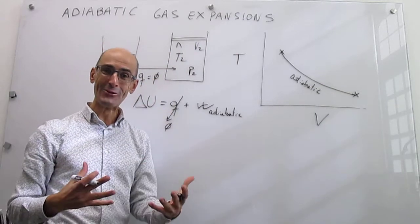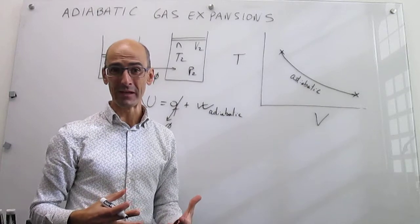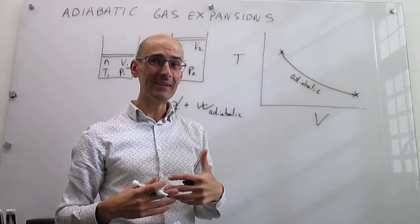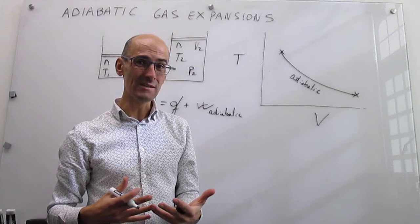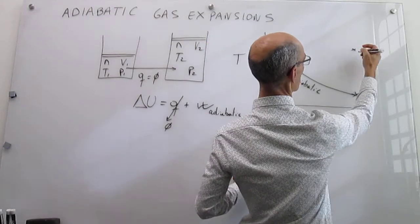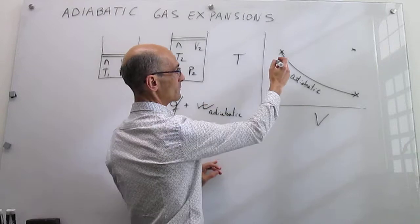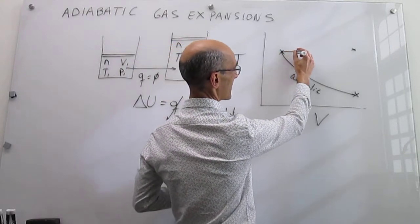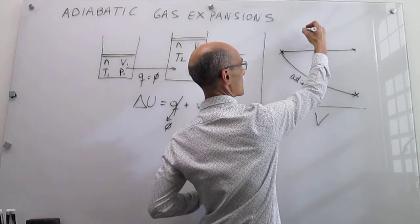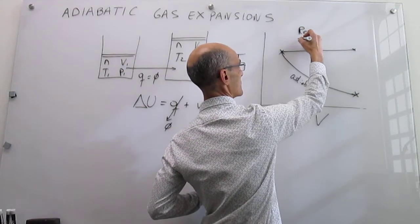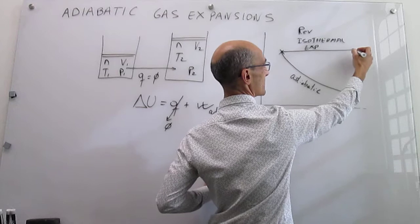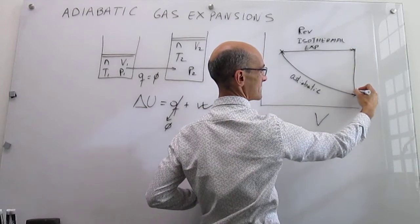Our goal is to calculate the change in internal energy. Since internal energy is a state function, we can trace an alternative route from the initial point to the final point. We can break the process into two steps. The first is an isothermal gas expansion — no change in temperature but the volume increases — which we make a reversible isothermal expansion.